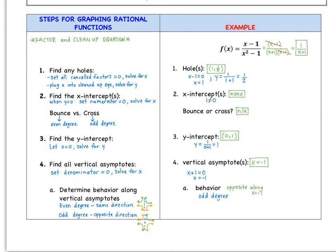The first thing we need to do when graphing rational functions — step number one — we always factor and clean up the equation. Looking at f(x) = (x − 1) / (x² − 1), I notice that x² − 1 isn't factored completely. It factors as (x + 1)(x − 1). I have an x − 1 in the numerator and denominator, so those cancel. My cleaned-up version is 1 over (x + 1), and we'll use that from now on.